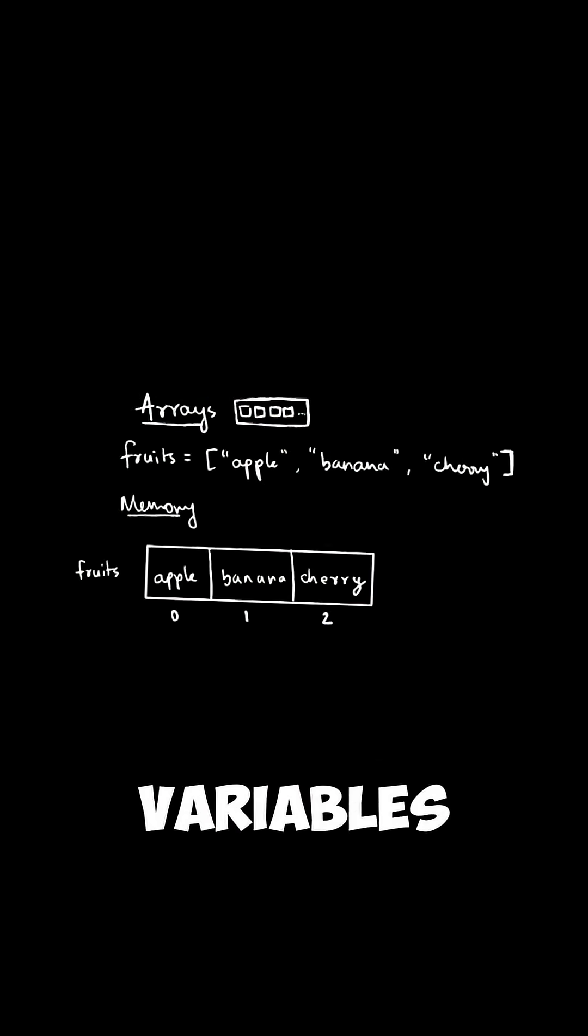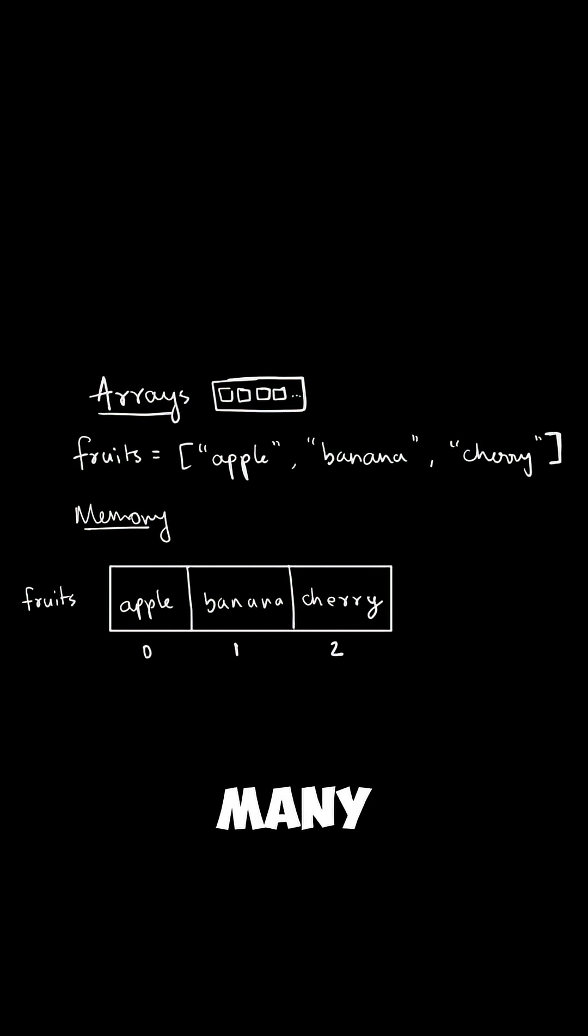Lastly, we have arrays or a group of variables together. We can store many values next to each other under a single data type. For example, fruits array stores apple, banana, and cherry.